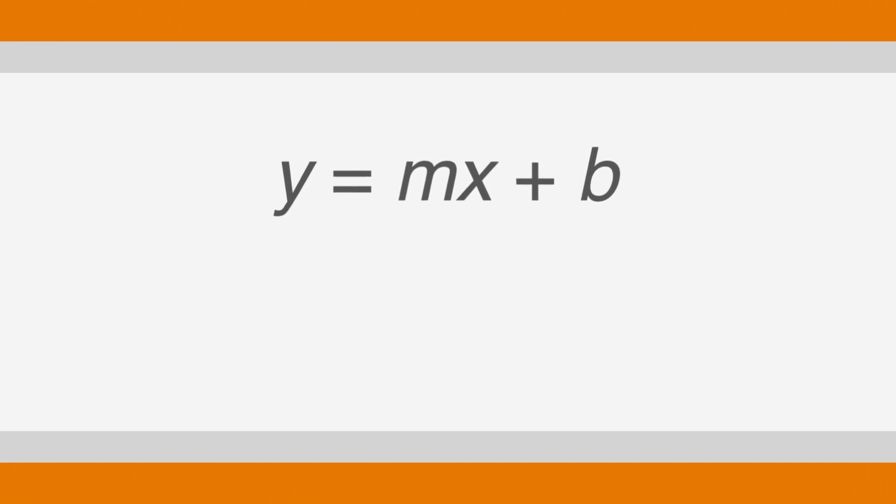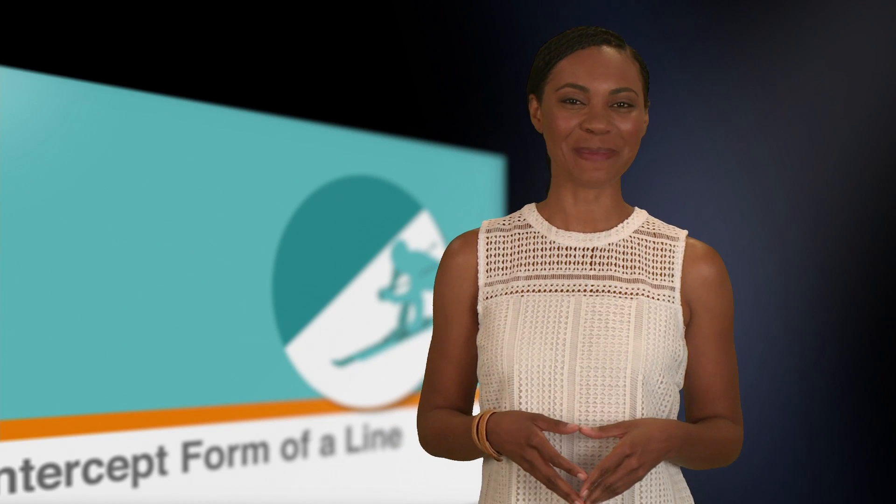The equation we'll use is y equals mx plus b, where y is the y-coordinate, m is the slope, x is the x-coordinate, and b is the y-intercept. But what fun is knowing all of this if we can't apply it to a problem? Let's look at an example.